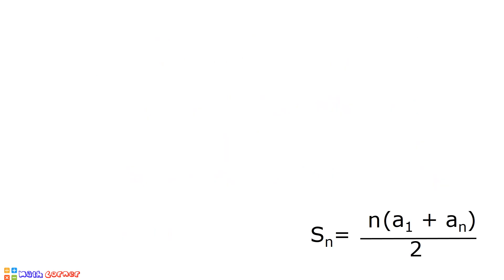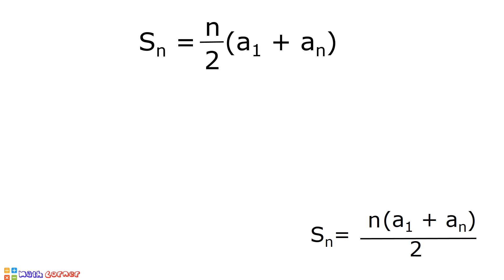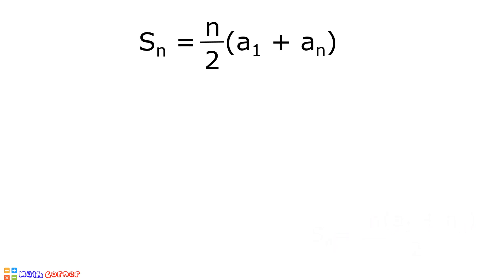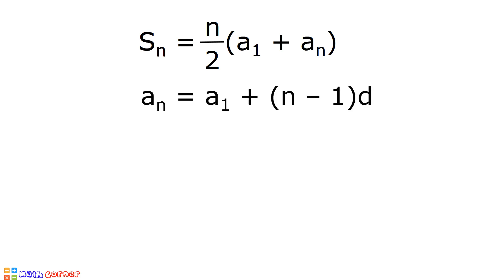This is our formula in finding the sum of the terms of an arithmetic sequence. We can rewrite this formula as S sub n is equal to n over 2 times the quantity a sub 1 plus a sub n. We can expand our formula further since a sub n is equal to a sub 1 plus the quantity n minus 1 times d.